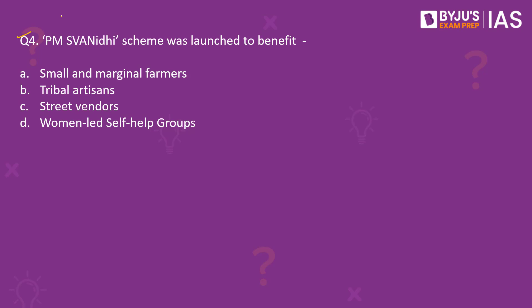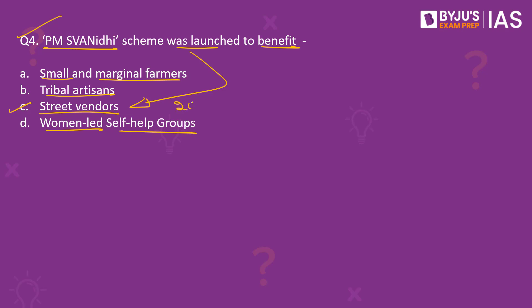Now let's take a look at the fourth question. The PM SVANidhi scheme was launched to benefit — small and marginal farmers, tribal artisans, street vendors, or women-led self-help groups. The correct answer is option C. This scheme was launched in 2020 to primarily benefit street vendors.